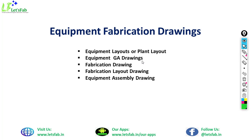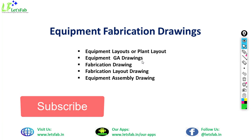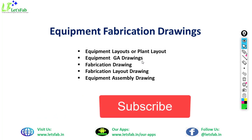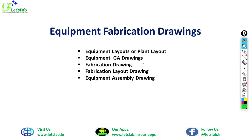The next section covers equipment fabrication drawings. The flow diagrams we discussed earlier are mostly used for reference; if you are aware of those drawings, you can easily understand the others. Most of the time, if you are a fabrication engineer, your main point of contact is the fabrication drawing. In equipment fabrication drawings, there are five types: equipment layout or plant layout, equipment GA drawing, equipment fabrication drawing, fabrication layout drawing, and equipment assembly drawing. We will see them one by one.